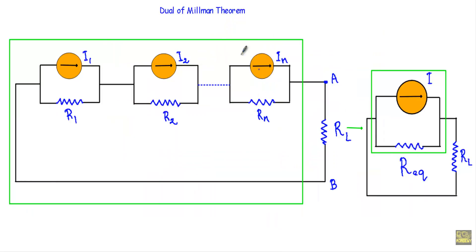In this video I will talk about the dual of Millman's theorem. It states that if we have n current sources I1, I2, up to In, having their internal resistances R1, R2, up to Rn connected in parallel with them. I1 is connected in parallel with R1, I2 is connected in parallel with R2, and In is connected in parallel with Rn.